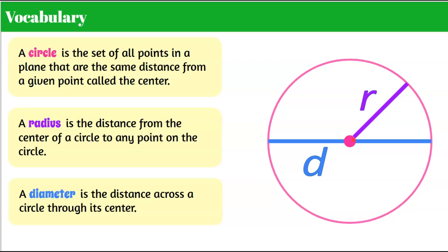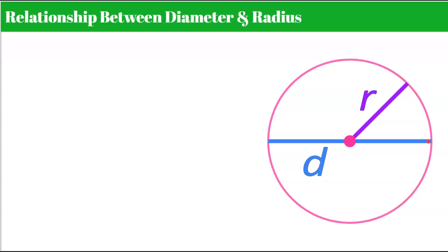If this segment does not pass through the center, it is not the diameter — you'll learn about that in high school, it's called a chord. To be the diameter, it has to pass through the center. So the radius is from the center to the outside, and the diameter goes from one side of the circle through the center to the other side. Now let's talk about the relationship between the diameter and the radius.